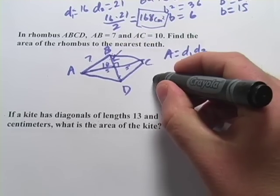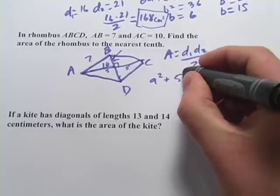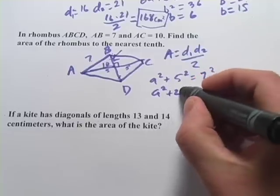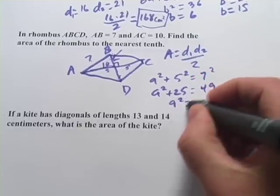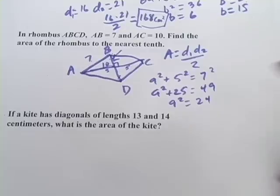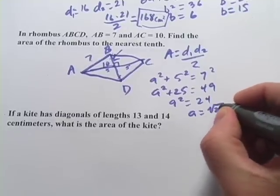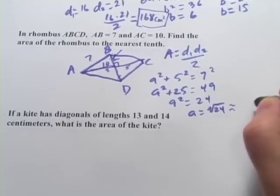We'll call this side A that we're looking for, A squared plus, well, B is 5, so 5 squared equals 7 squared. So that's A squared plus 25 equals 49. That's A squared equals 24, so A is the square root of 24, after we take the square root of both sides. And let's see, that's about, well, let's say 4.90.